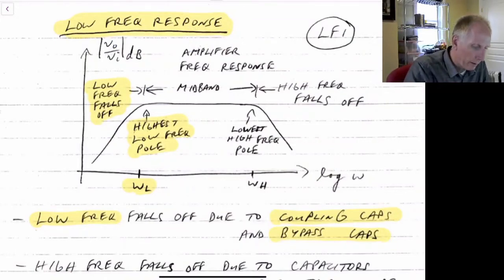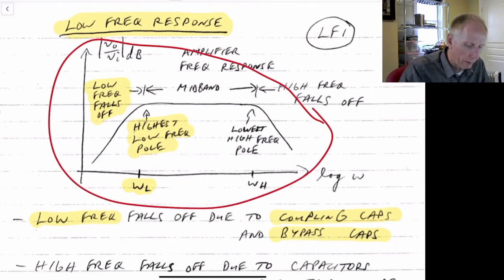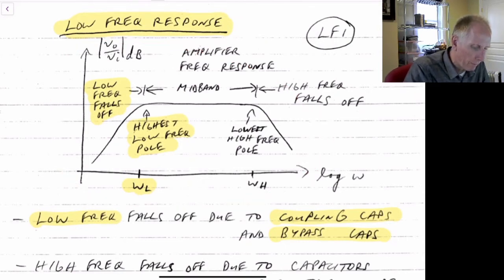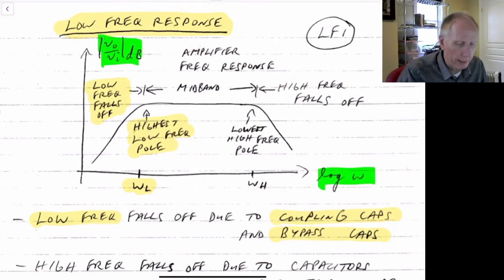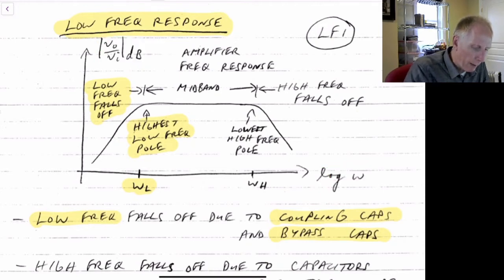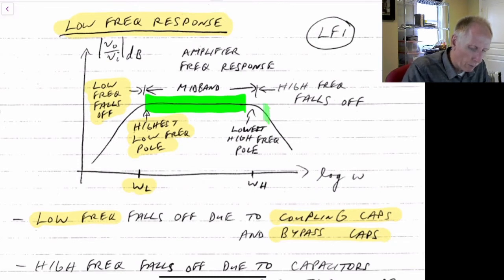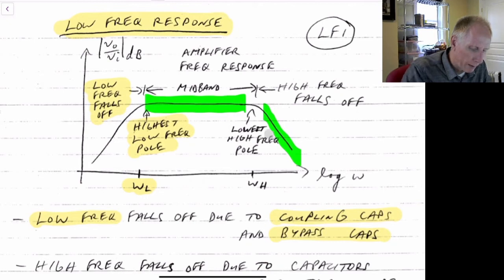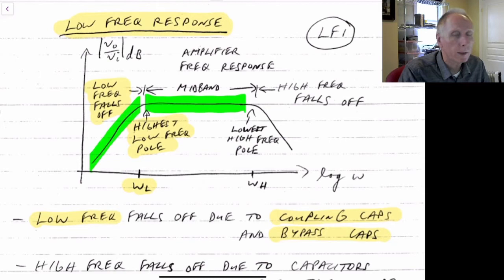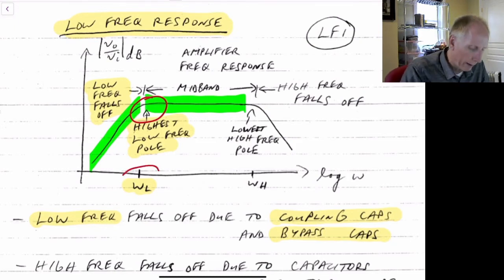Here we've drawn a frequency response for a typical amplifier. This is the gain of our amplifier versus frequency, potentially in the log domain. The amplifier has a mid-band gain in the region where we'll generally be using it. At higher frequencies, the amplifier rolls off. We won't be discussing that region in this video. Instead, we'll be discussing the region to the left — the low frequency region — and in particular we'll be trying to find the cutoff, the location where we switch from the gain rising to the mid-band region.